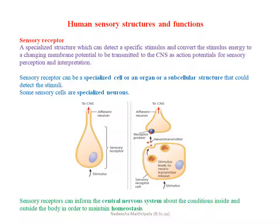That membrane potential value can be changed by stimulus energy to create an action potential, which is then transmitted to the central nervous system — that is, to our brain or spinal cord — where it is identified as sensory perception and interpretation. So the full definition: a sensory receptor is a specialized structure that detects a specific stimulus, converts that stimulus energy to a change in membrane potential, and transmits it to the CNS as action potential for sensory perception and interpretation.